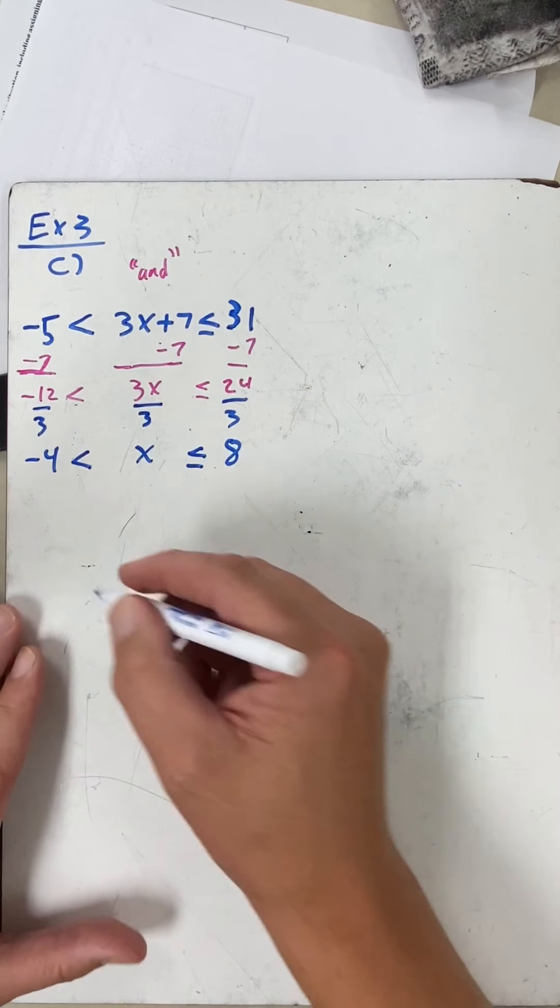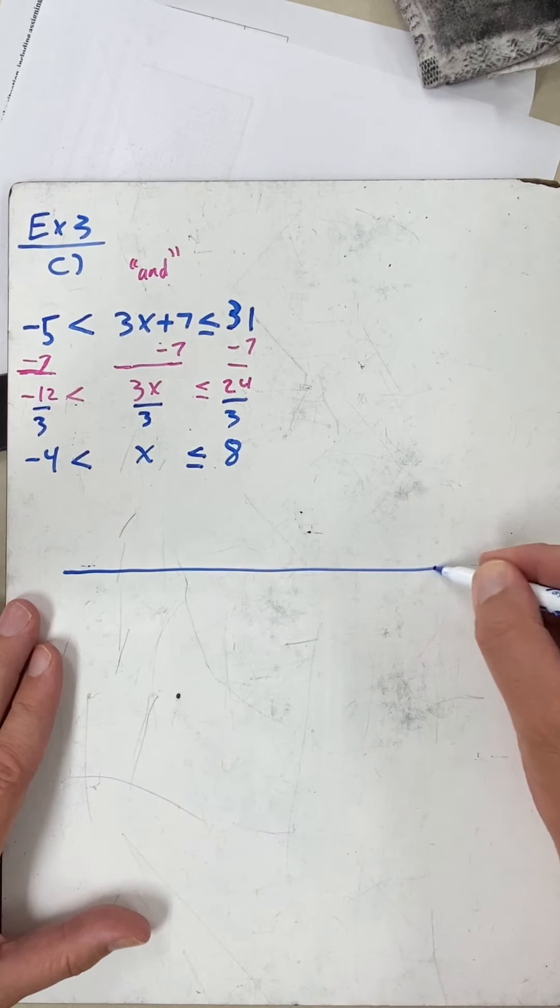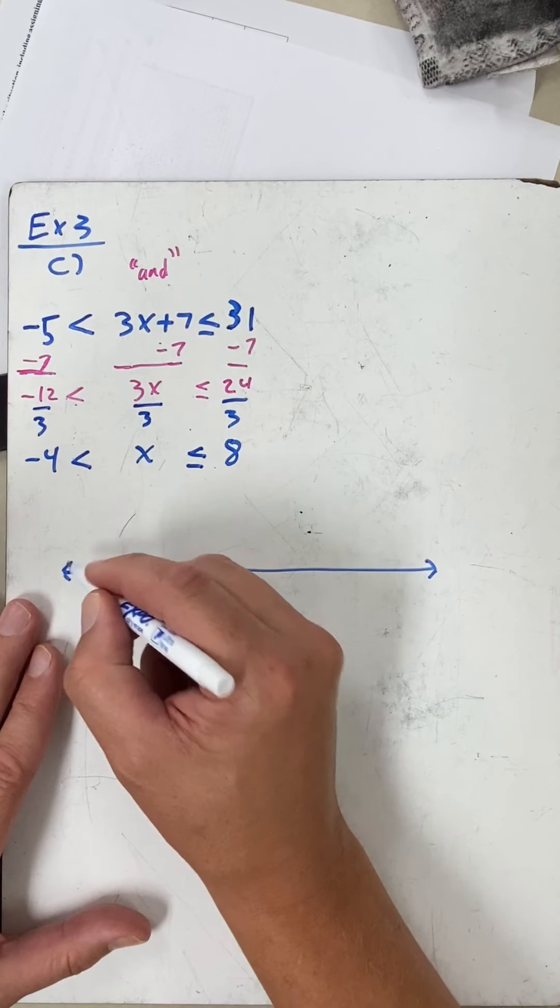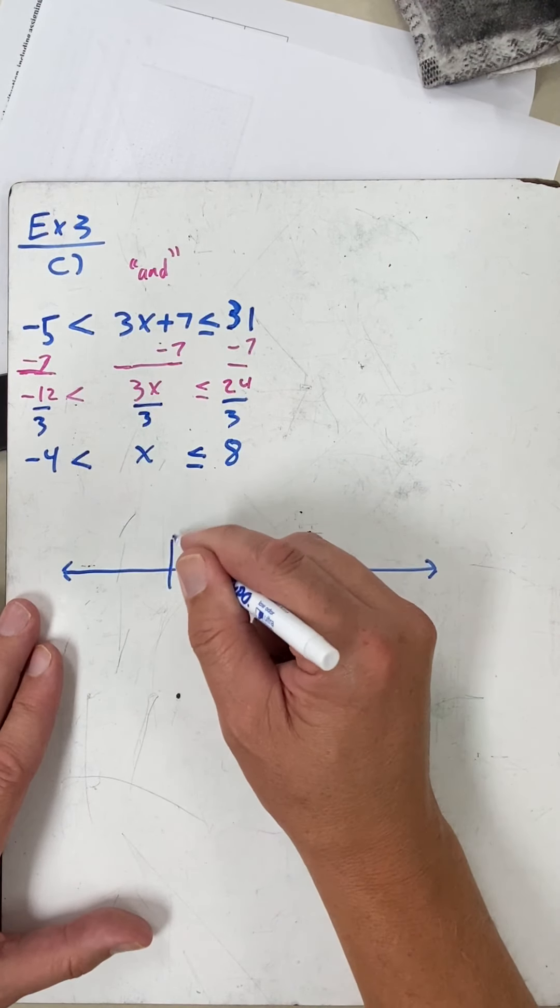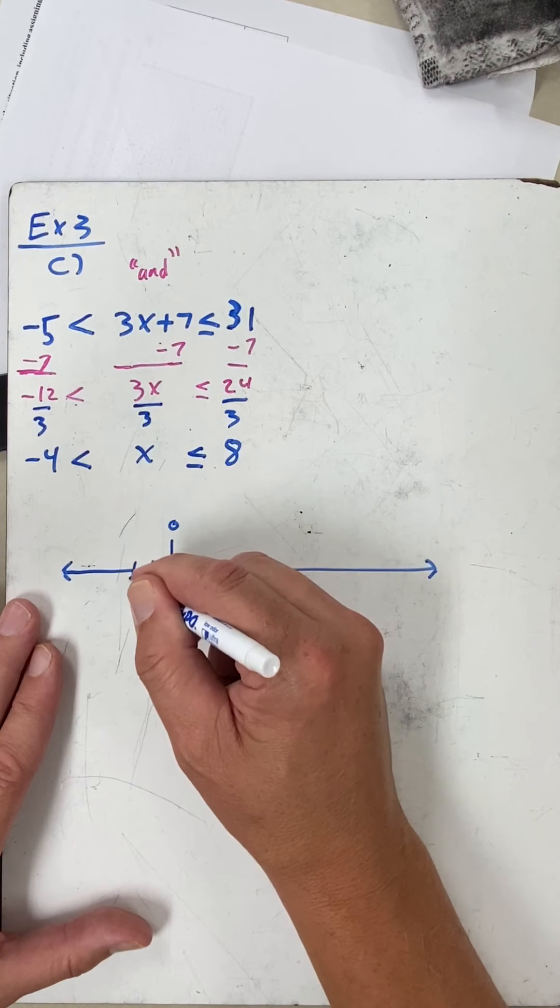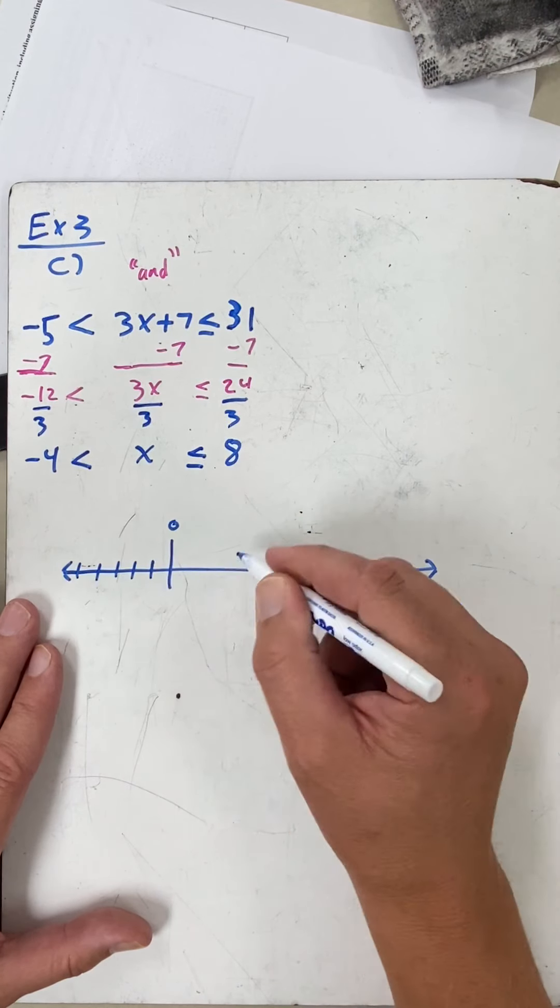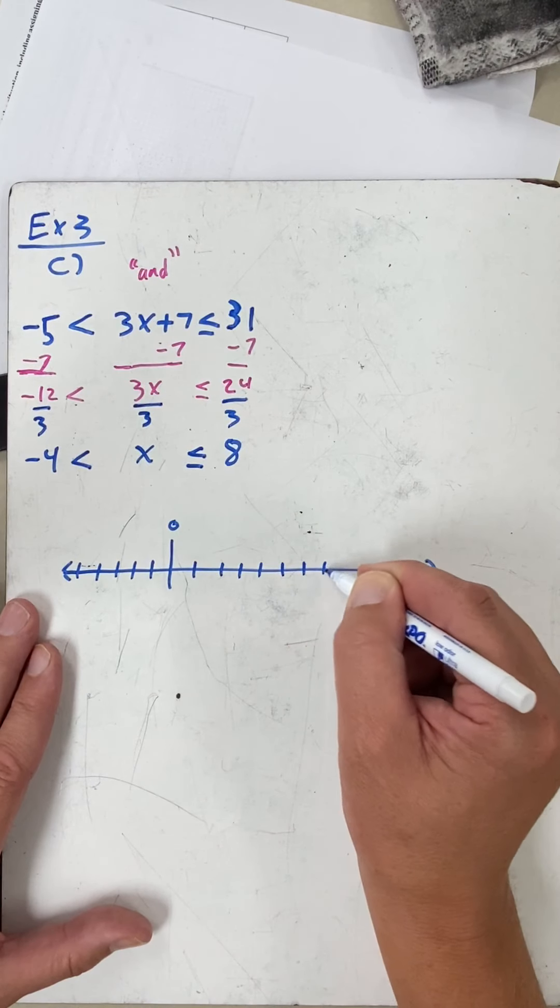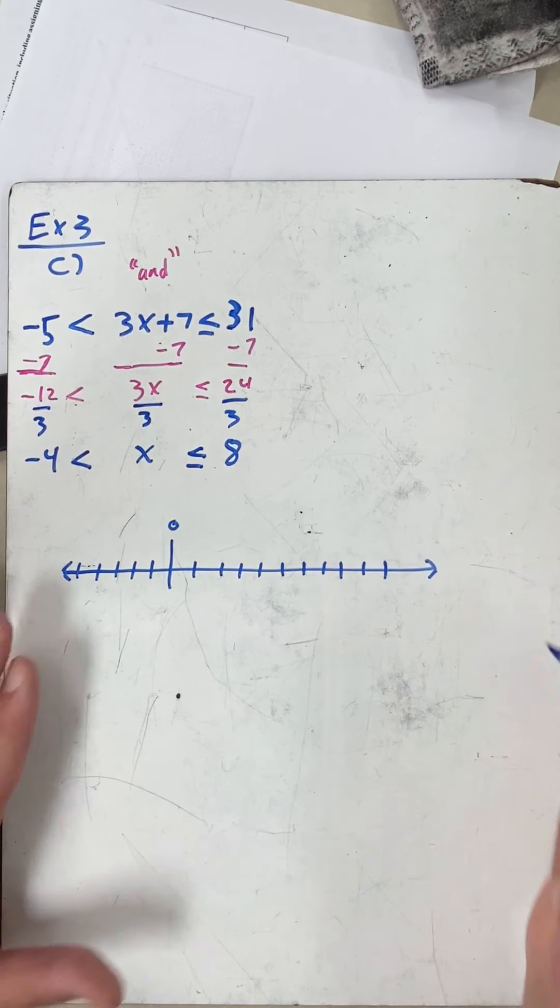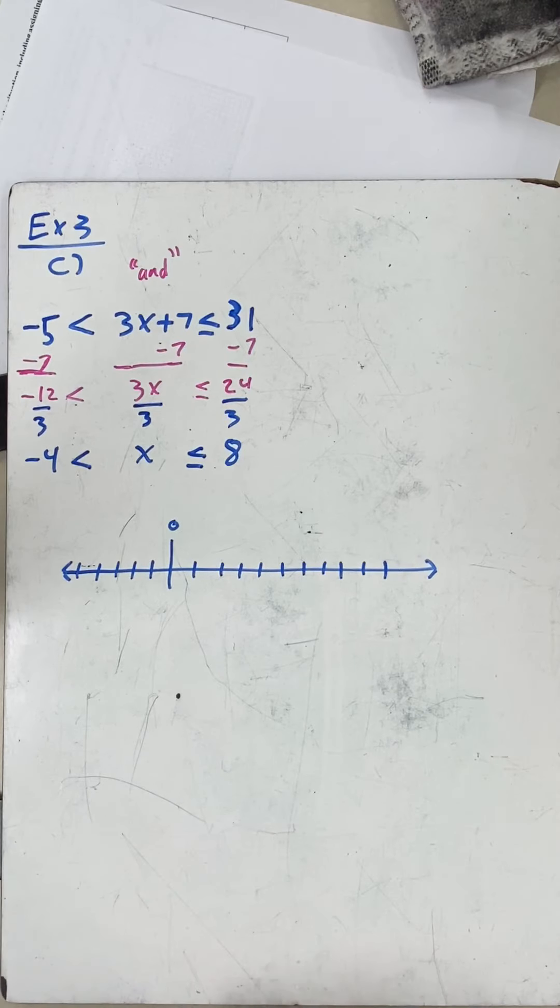So we go to graph our number line. You could go by twos if you wanted, or you can just count. I'm gonna go zero, a little to the left, two, three, four, five, one, two, three, four, five, six, seven, eight, nine, ten, whatever.